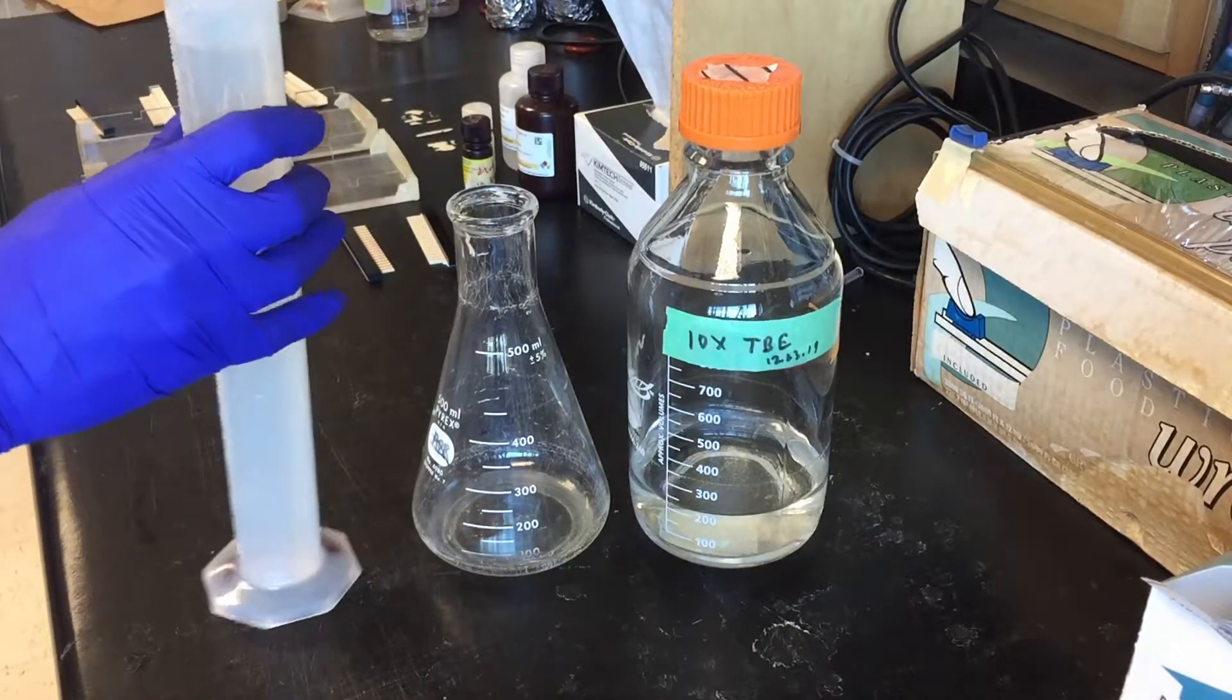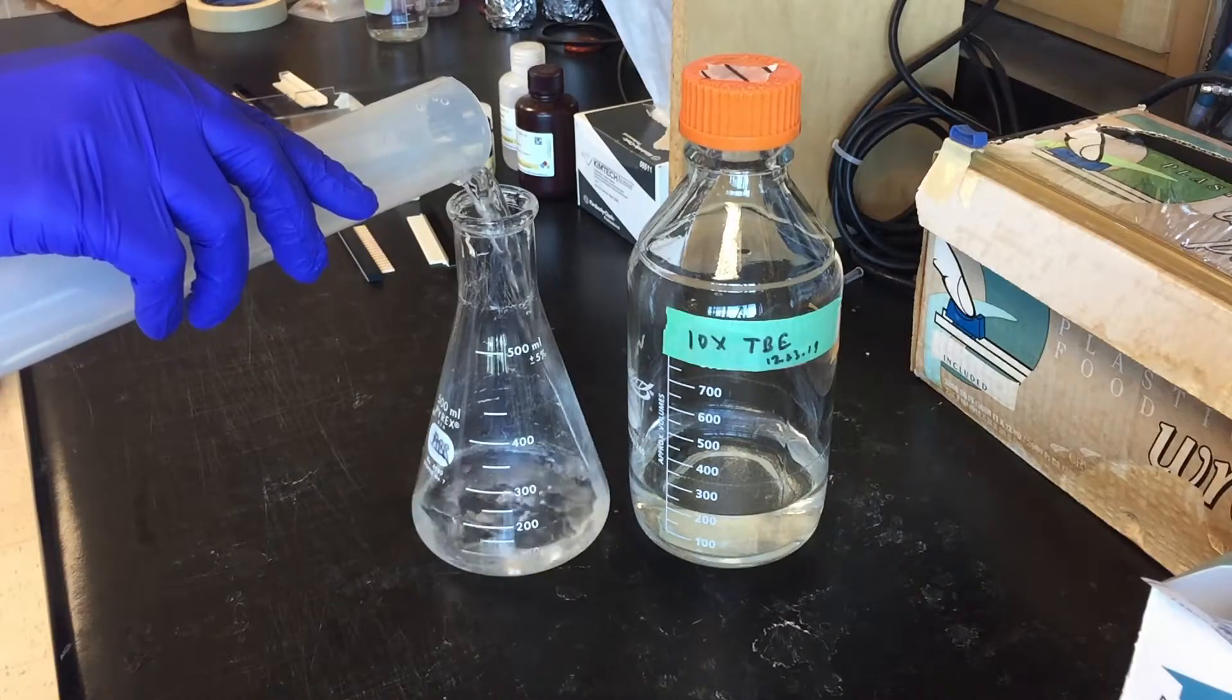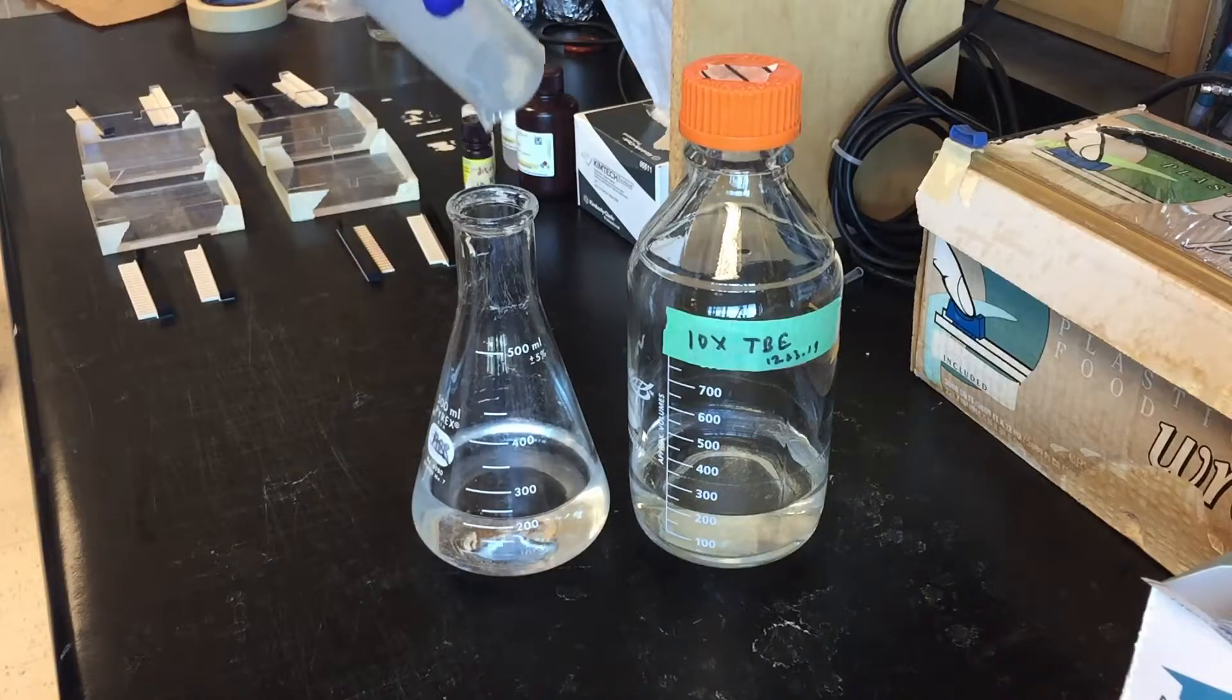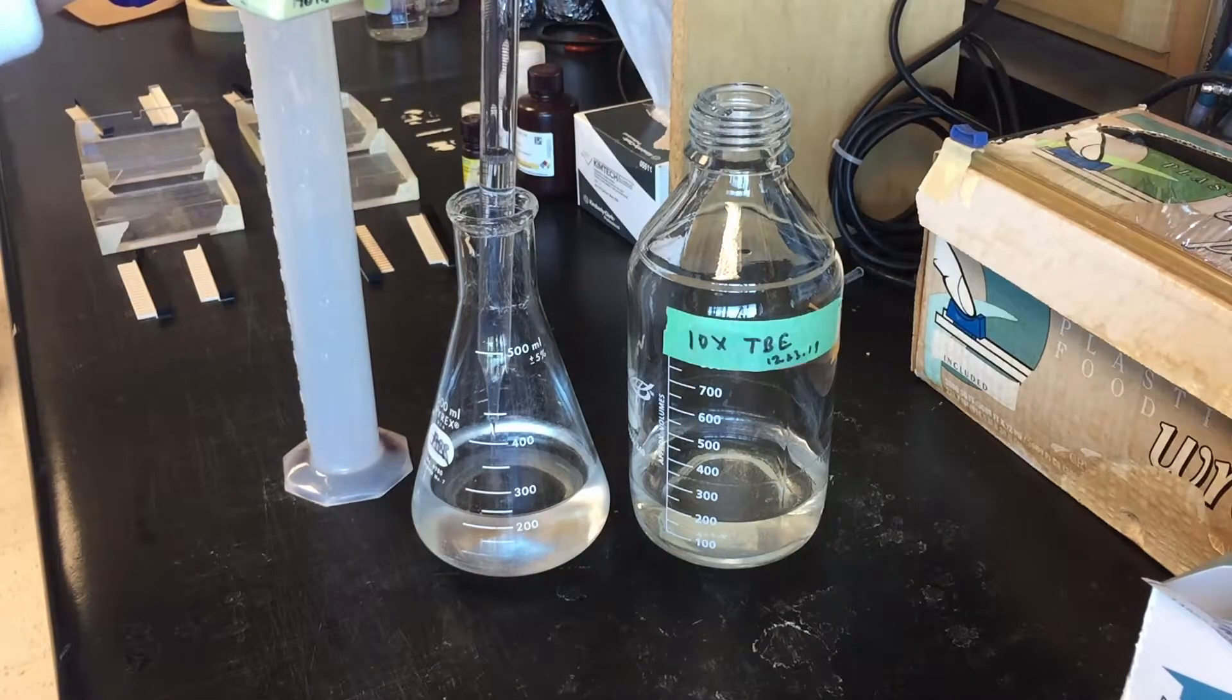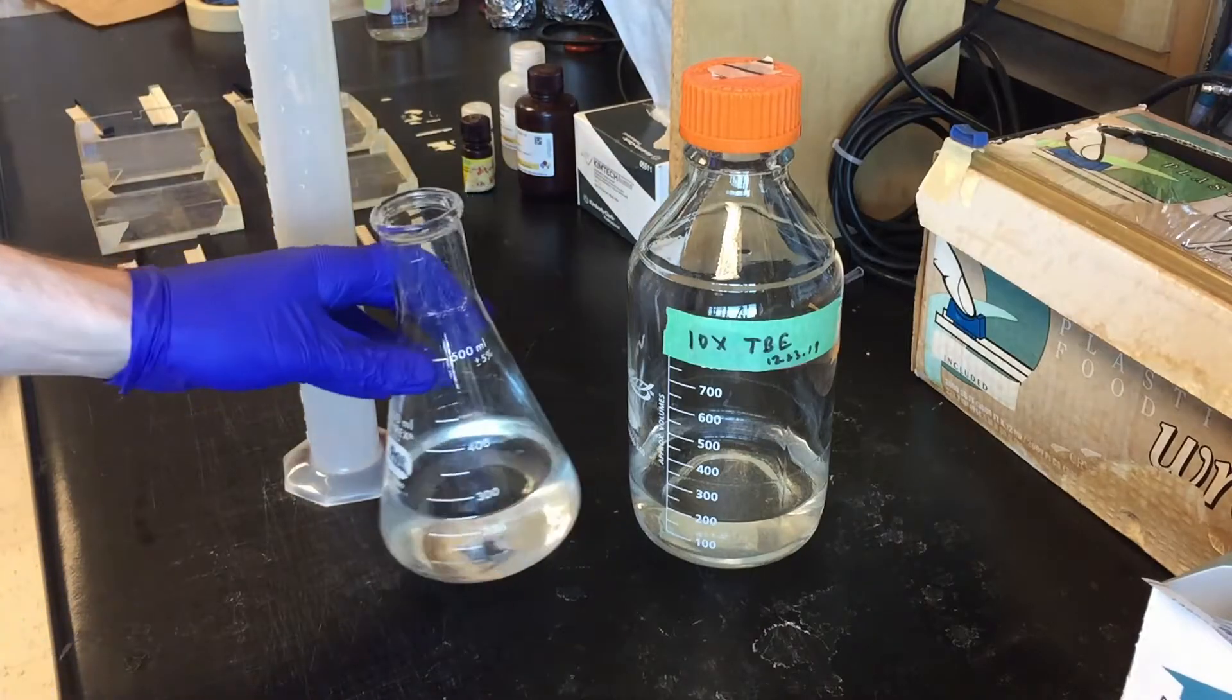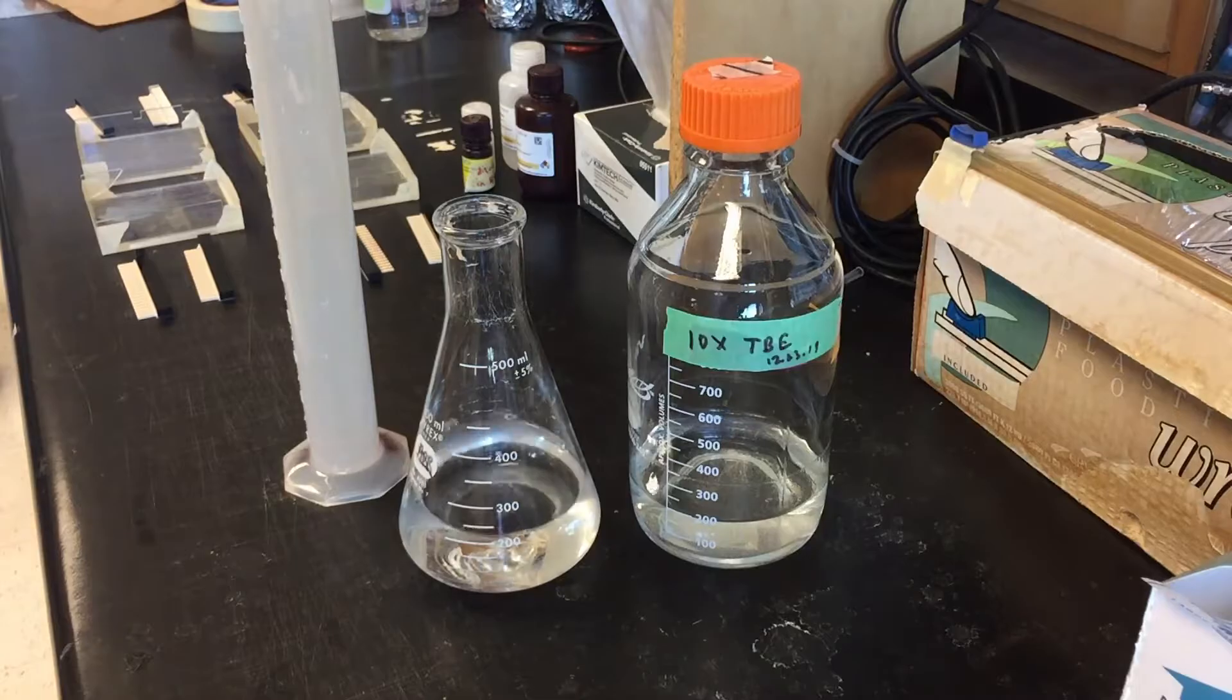I'm going to aim to make roughly one percent agarose gel using 1x TBE. TBE is just tris and borate which are slightly basic buffers and they'll provide ions for the electrophoresis, and EDTA which is a chelating agent for minerals like magnesium. We're using it to prevent enzyme activity in things like polymerase or nucleases.